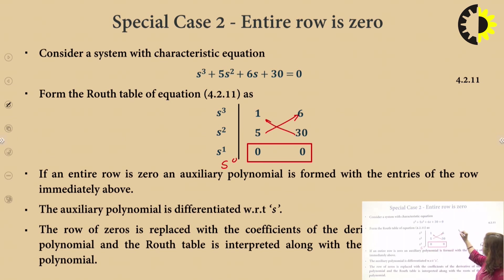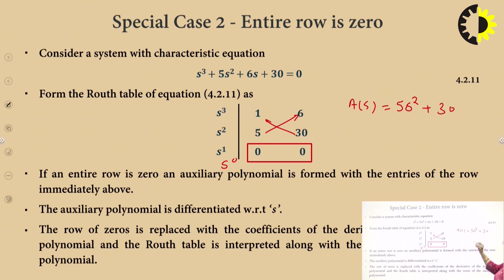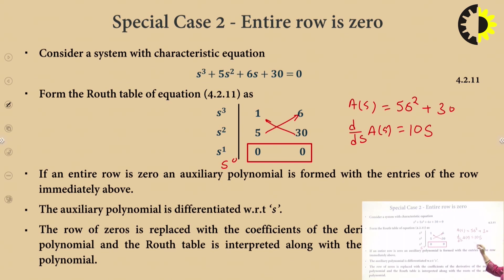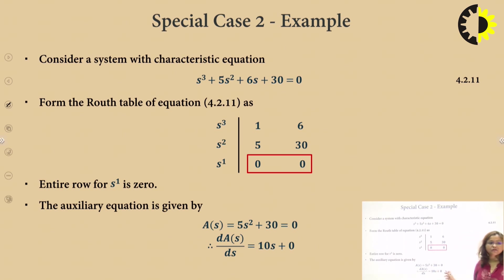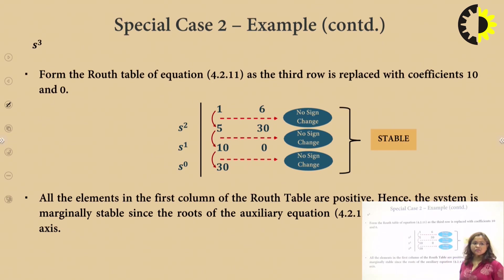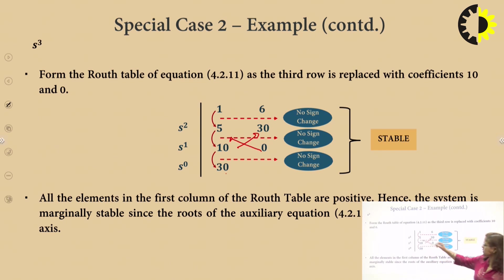The auxiliary polynomial is A(s) = 5s² + 30. We differentiate this polynomial: dA(s)/ds = 10s. The next row is replaced by coefficients 10 and 0. Then we calculate (5×30 − 0×10) / 10 giving 30 as the last element. Since there are no sign changes in the first column, it appears the system is stable — but we must check the auxiliary polynomial further.